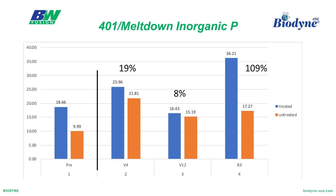Here's some data looking at 401 and meltdown for inorganic phosphorus. This is a trial of treated versus untreated with 401 and meltdown. We're not looking at the organic side here — just at the amount of inorganic phosphorus available. Right off the bat we see about a 19% increase in inorganic phosphorus in the treated versus the untreated at V12, about 8% at another point, and at R3, 109% more inorganic phosphorus available to the plant than with the untreated. These biology are working season-long, throughout the season.